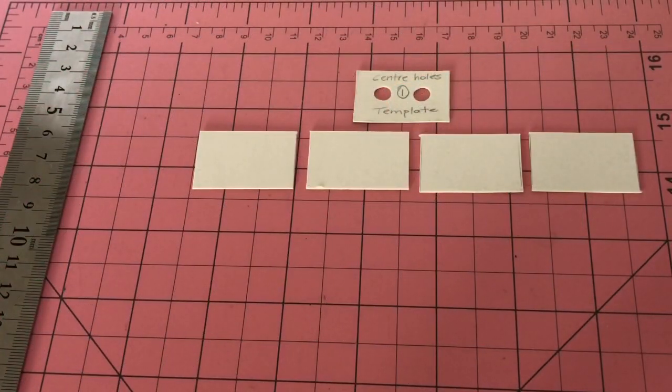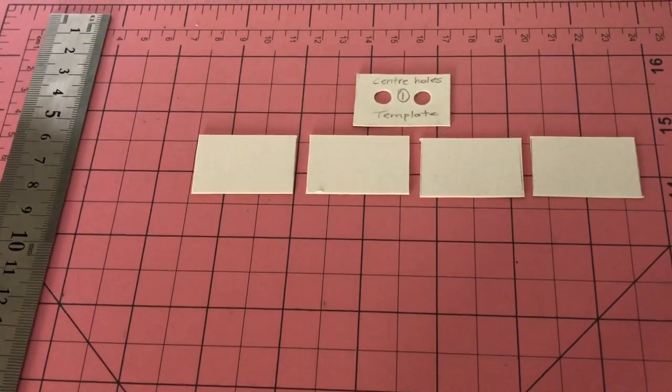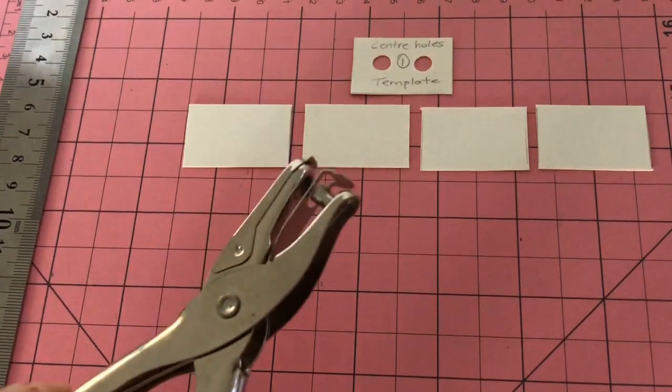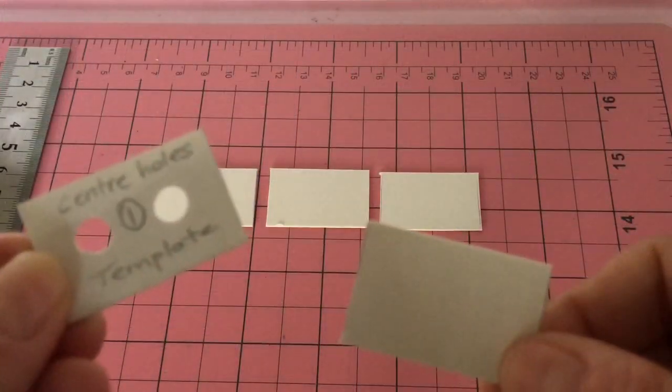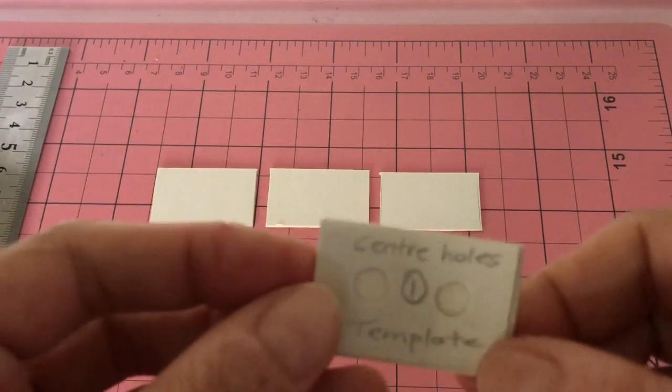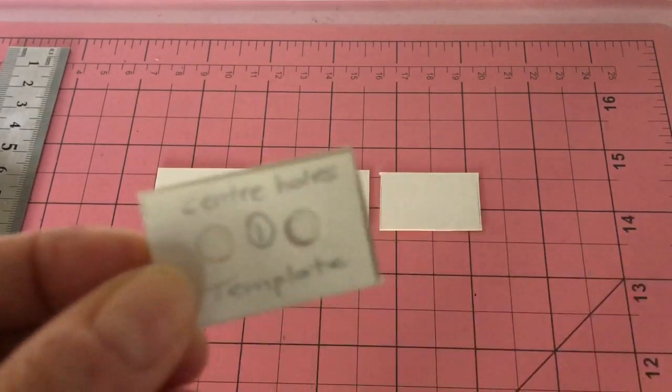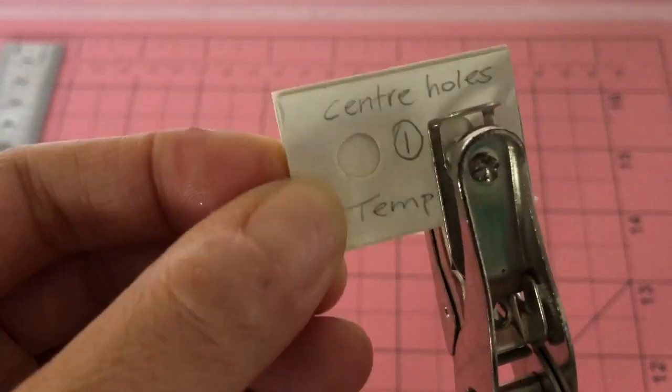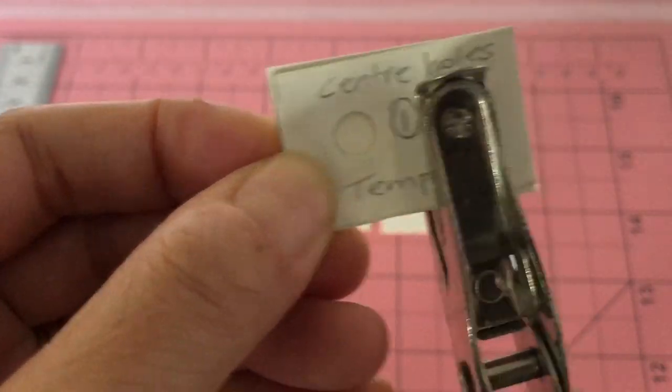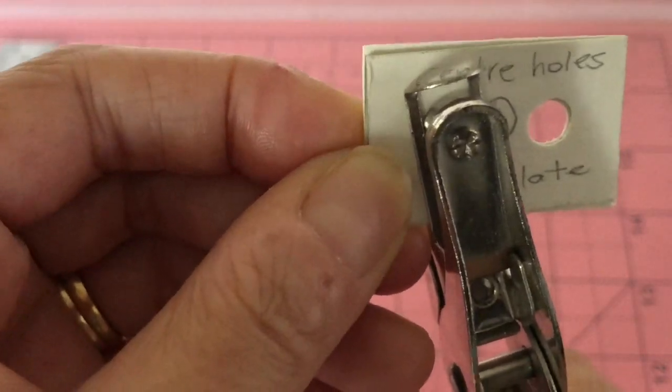Take four rectangles for the body of the cassette. Using a template, make holes as shown. Place the template over your blank rectangle and punch. Using a template helps ensure all your pieces are the same.